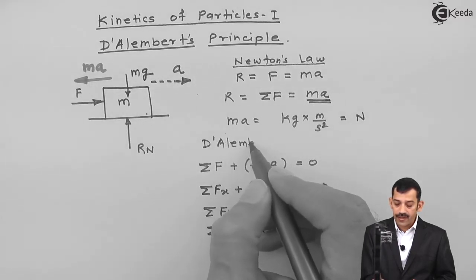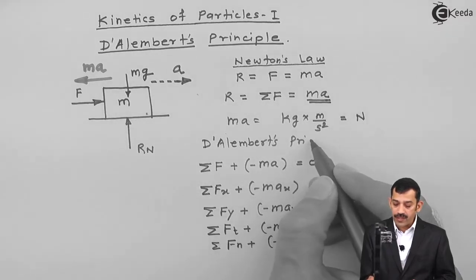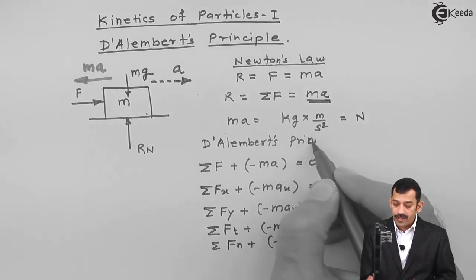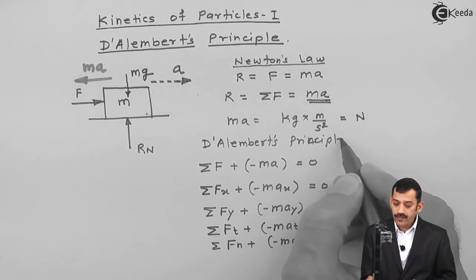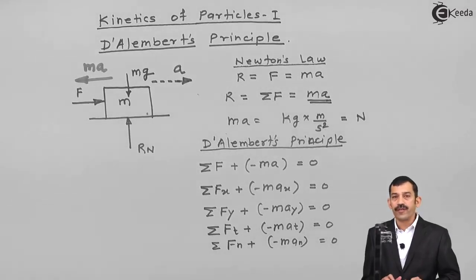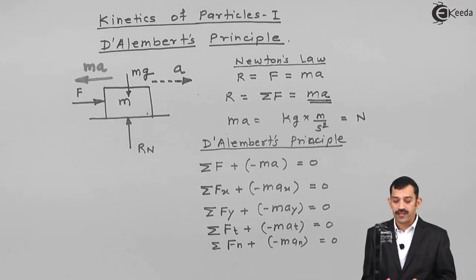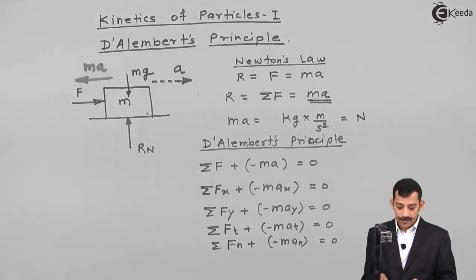D'Alembert's Principle: the difference between Newton's Law and D'Alembert's Principle — it seems to be the same, but the only difference is: when you write F equals mA, it is Newton's Law. When we take the mA term on the left side, summation of forces plus minus mA equals zero — that is D'Alembert's Principle. When solving a problem, applying Newton's Law as well as D'Alembert's Principle gives the same solution.